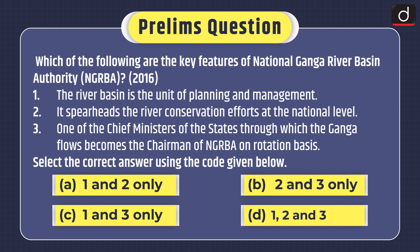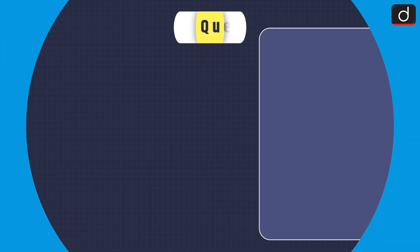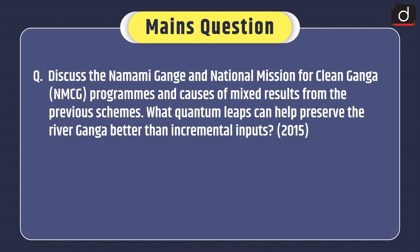Select the correct answer using the code given below: (a) 1 and 2 only, (b) 2 and 3 only, (c) 1 and 3 only, or (d) 1, 2, and 3. The Mains question is: Discuss the Namami Ganga and National Mission for Clean Ganga programs and the causes of mixed results from previous schemes. What quantum leaps can help preserve the river Ganga better than incremental inputs?